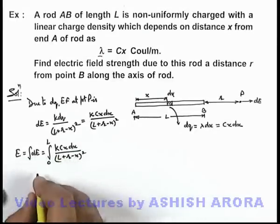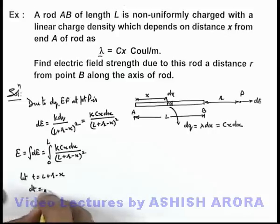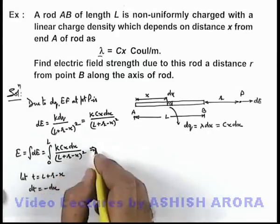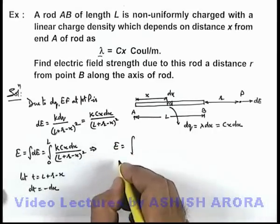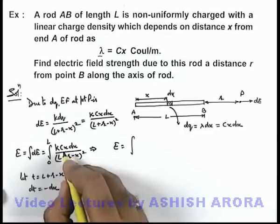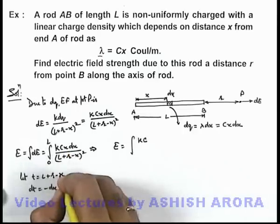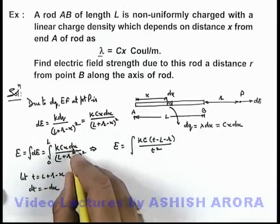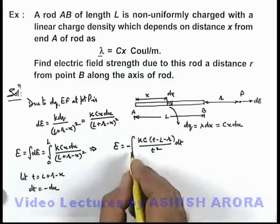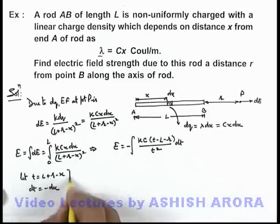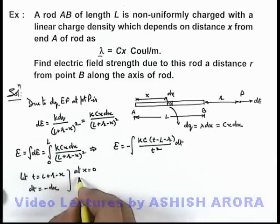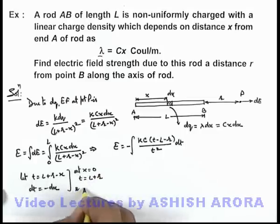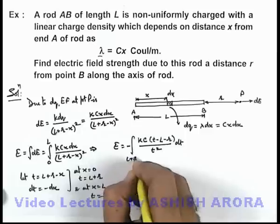To integrate this expression, we use the substitution t = l + r − x, which gives dt = −dx, and x = t − (l + r) (i.e., x = t − l − r). Changing the limits: at x = 0, t = l + r; at x = l, t = r. So the limits change from l + r to r.